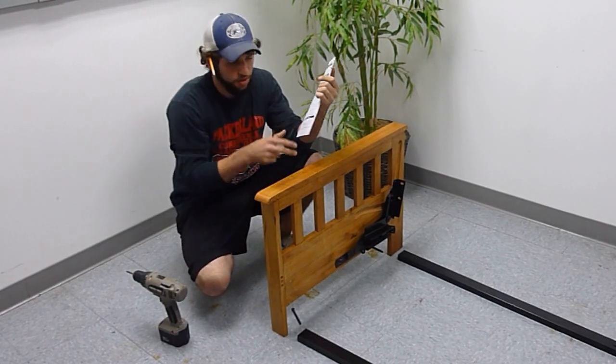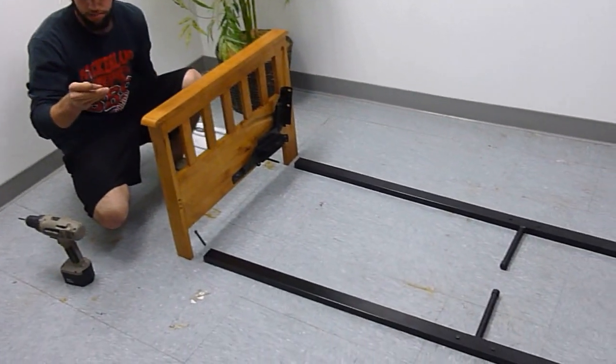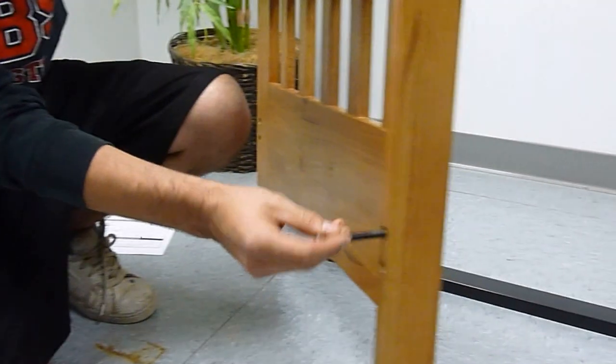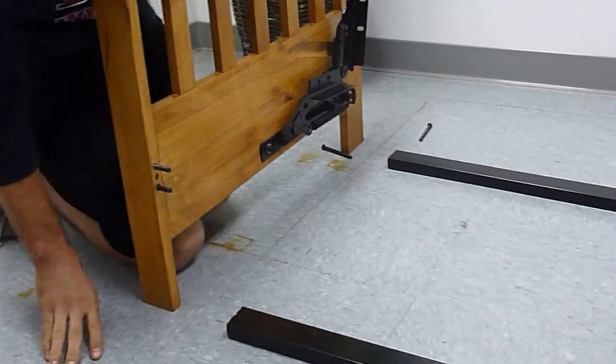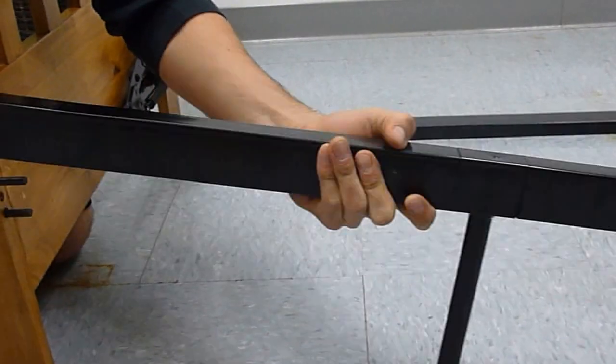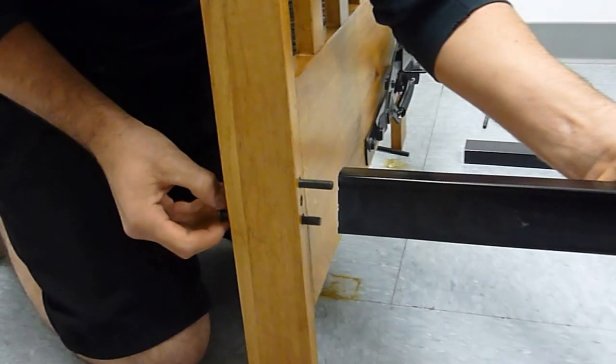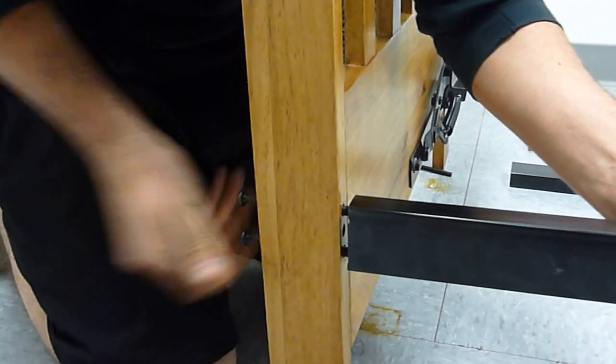Step three is going to be attaching the stretcher rails to the arms. For this you're going to need to take the longest bolt, which is the letter R. You're going to stick them through the holes on the arm. Simply take the stretcher rail with the bolts on the T-connectors facing in so they're not seen on the outside. Simply just screw these right into the stretcher rails.